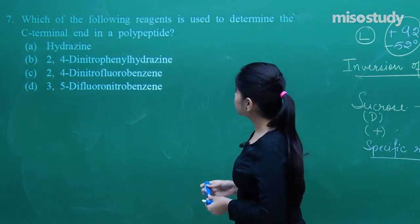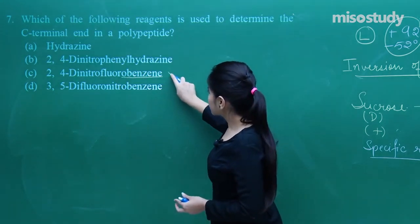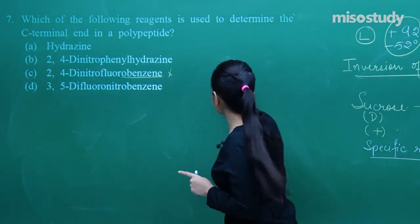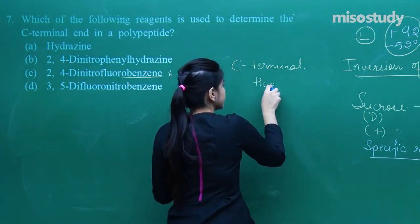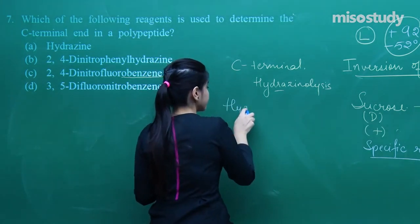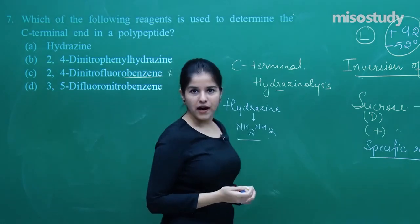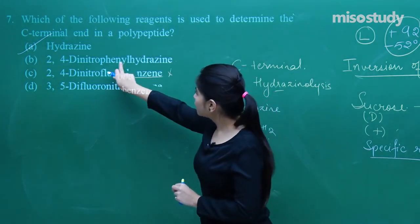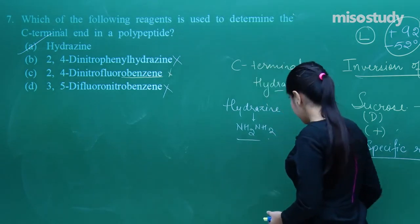Which reagent is used to determine the C-terminal? The passage tells us Sanger's reagent is used for the N-terminal, so that is not the answer here. For the C-terminal, hydrazinolysis is used — the reagent being hydrazine, which is NH₂NH₂. We do not use 2,4-dinitrophenylhydrazine for this purpose. Hydrazine is the correct answer.